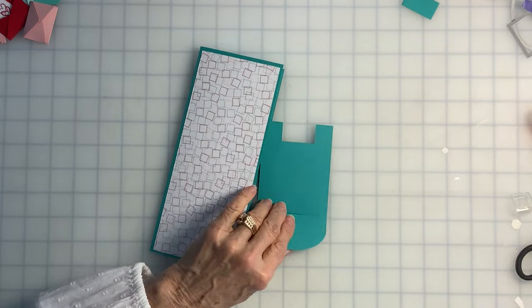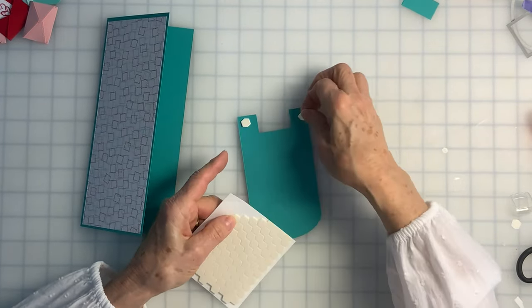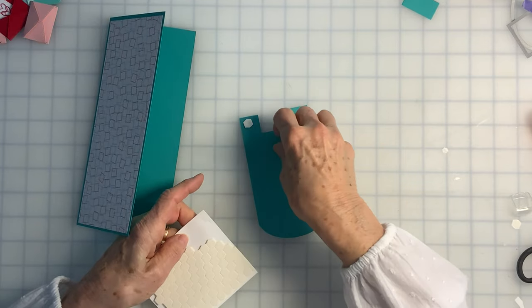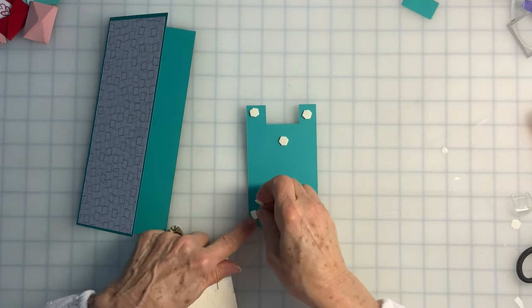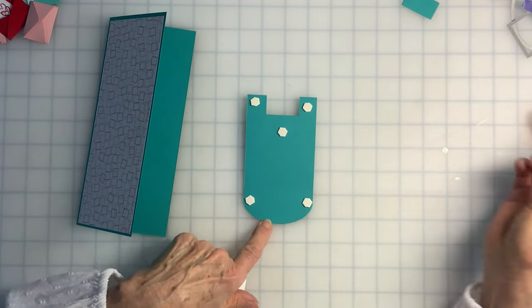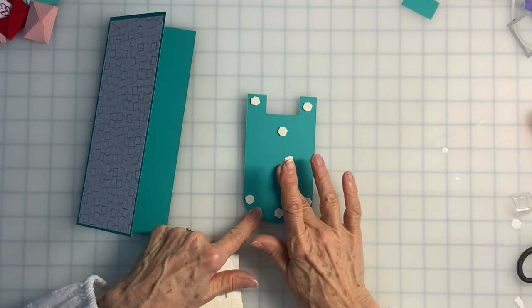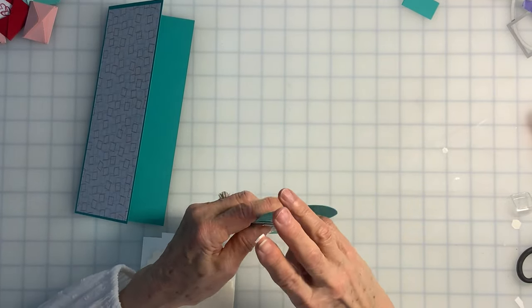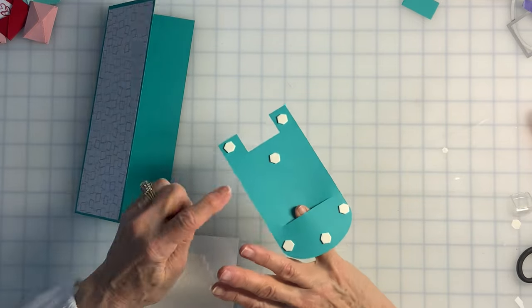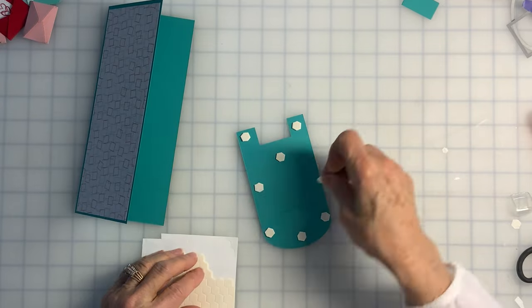And I'm going to use Stampin' Dimensionals to attach the mailbox. I want to make sure I don't put any Stampin' Dimensionals right here, because I may want to slide something in from the front. As you'll see, if I put my finger through there, I would need this space. So I'm just going to make sure that I put them to the side.